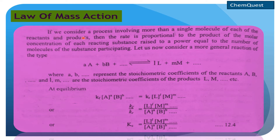If we consider a process involving more than a single molecule of each of the reactants and products, then the rate is proportional to the product of molar concentration of each reacting substance raised to a power equal to the number of molecules of the substance participating.